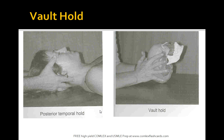The index fingers are placed over the greater wing of the sphenoid. The middle fingers are placed on the squamous portion of the temporal bone, the area just anterior to the ears. The ring fingers are placed over the mastoid process. The little fingers are positioned over the squamous portion of the occiput. Then the finger pads are used to induce motion. For the board exam: this technique is used to modulate SBS strains by balancing membranous tensions.